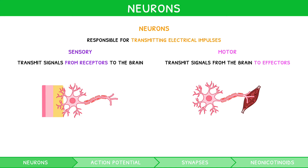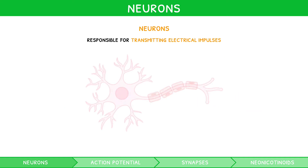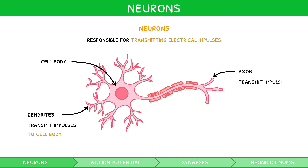For your IB Biology exam, you are expected to draw a neuron and identify its various structures. Each neuron has a cell body containing a cytoplasm and a nucleus. Connecting to each body are multiple short, branched fibres known as dendrites, which transmit impulses towards the cell body from other structures. Each cell body also has one long cylindrical fibre of 1 micrometre in diameter, named the axon, which transmits impulses away from the cell body towards other structures.